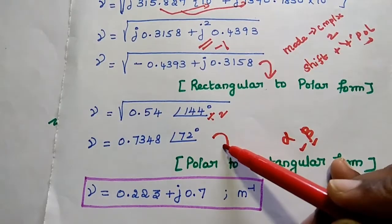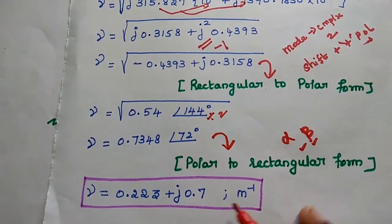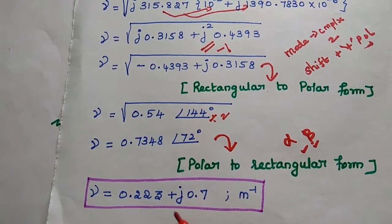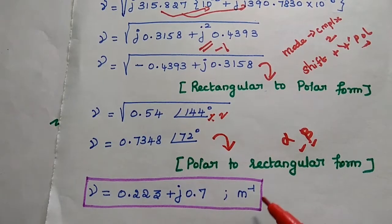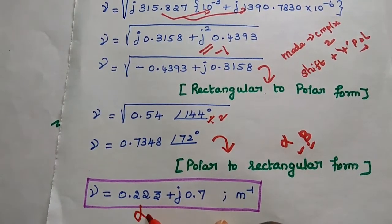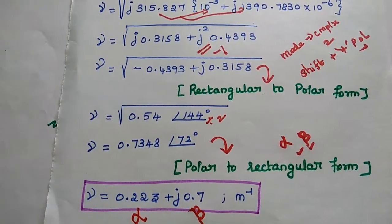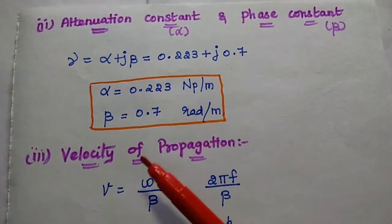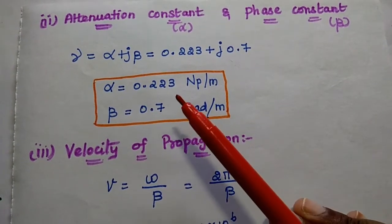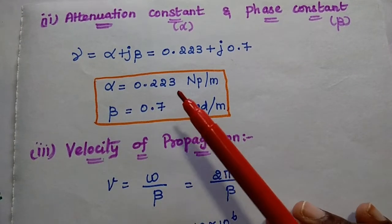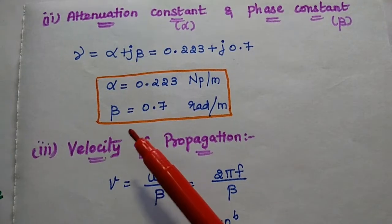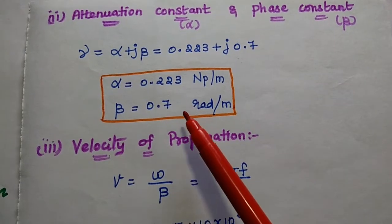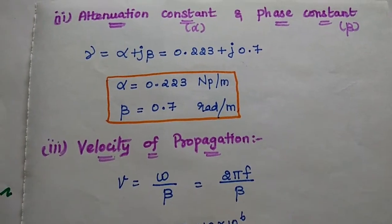Converting this polar form back to rectangular form, we get gamma equal to 0.223 plus j*0.7 per meter. The real part is alpha and the imaginary part is beta. So the attenuation constant alpha equals 0.223 neper per meter, and the phase constant beta equals 0.7 radian per meter.